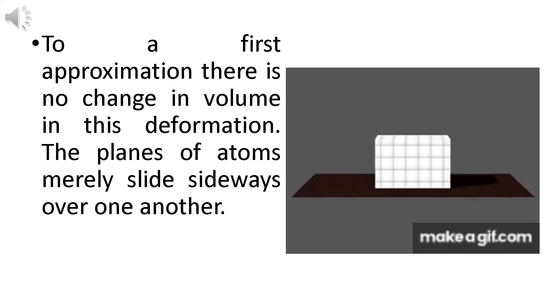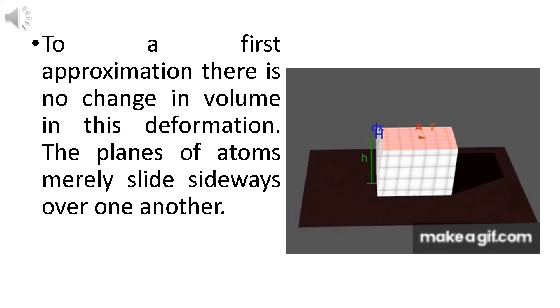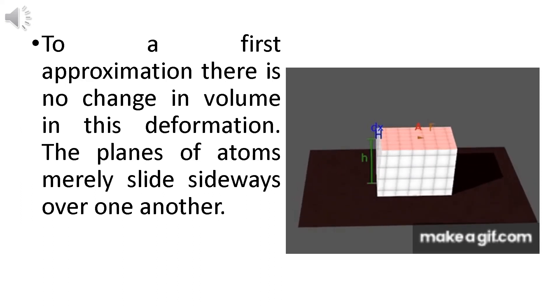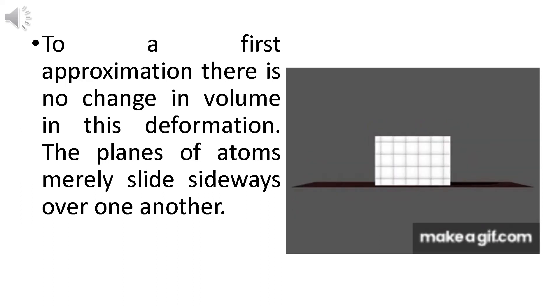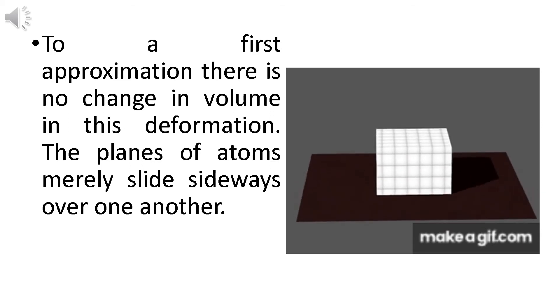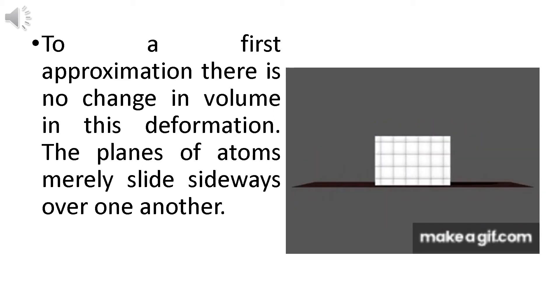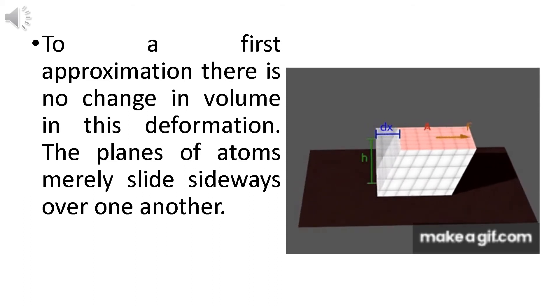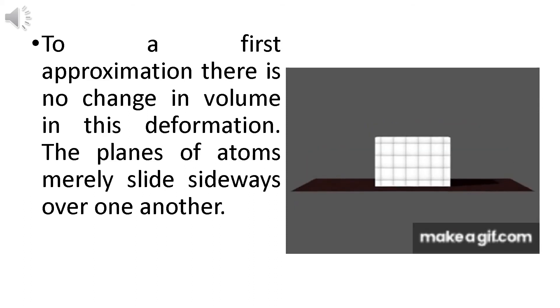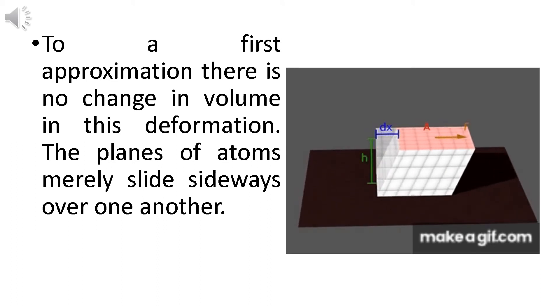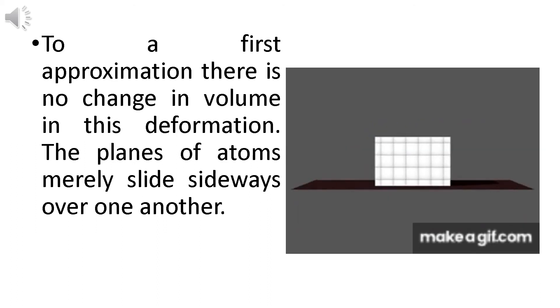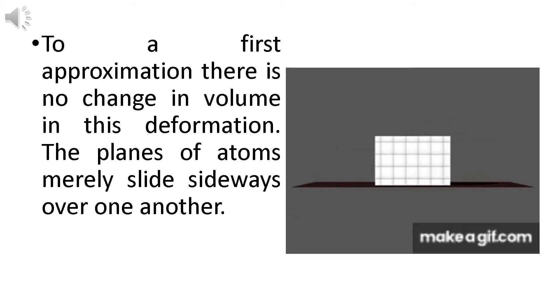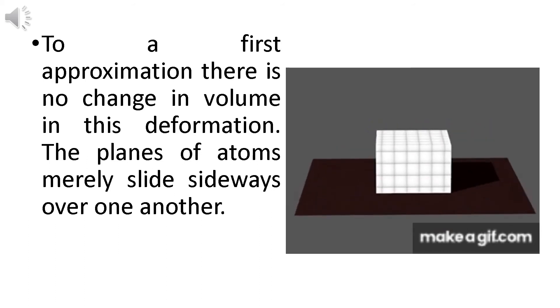To a first approximation, there is no change in volume in this deformation. The planes of atoms merely slide sideways over one another. So as you could see from the GIF, though nagkaroon ng pagbabago yung shape, nag-slant yung shape niya, hindi nagbago yung volume niya. So ganun, the same pa rin yung height, yung width, and yung length.